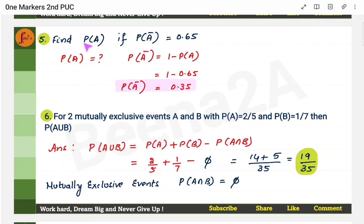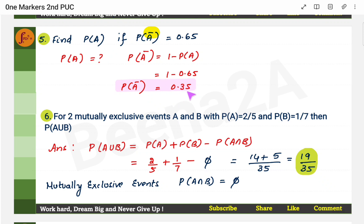Also remember: if you need to find probability of A given its complement, the complement formula is: 1 minus probability of A equals probability of its complement. So probability of A equals 1 minus the complement value. For example, 1 minus 0.65 gives 0.35.